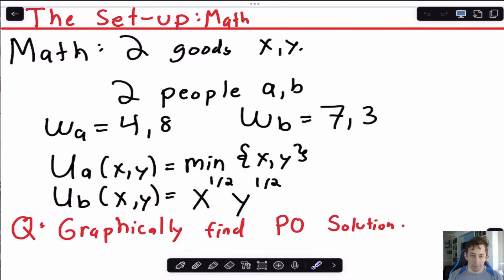In this problem, we've got two goods, good X and good Y, and two people A and B. Endowments are given such that person A has four of good X and eight of good Y. Person B has seven of good X and three of good Y. Utility for person A is the min of X and Y. Utility for person B is X to the one-half, Y to the one-half. The goal here is to draw the Edgeworth box and find the Pareto optimal solution using the graph.